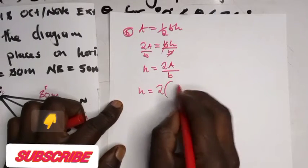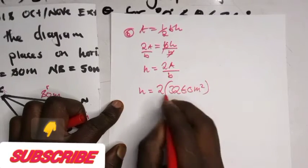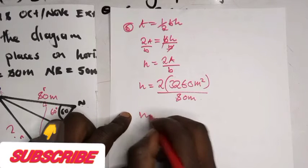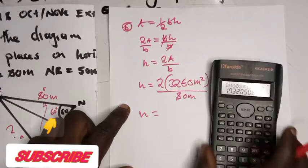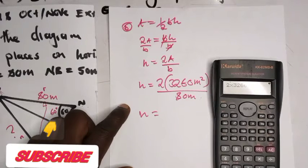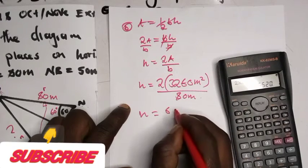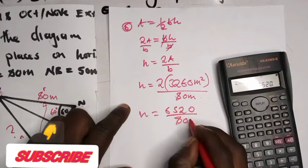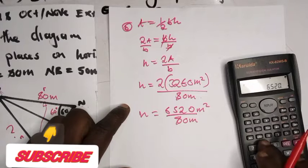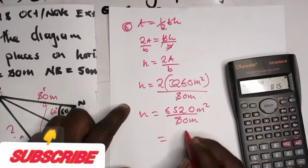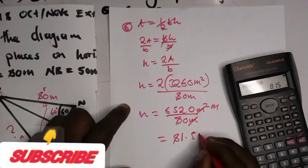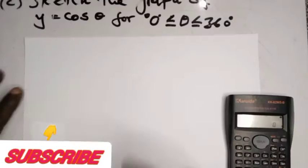Height equals 2A over b. Height equals 2 times the area — which we found to be 3260 meters squared — over b which is 80 meters. So we calculate 2 times 3260, which is 6520, divided by 80. When we divide meters squared by meters we remain with meters. Dividing gives us 81.5 meters as the shorter distance from R to KN.